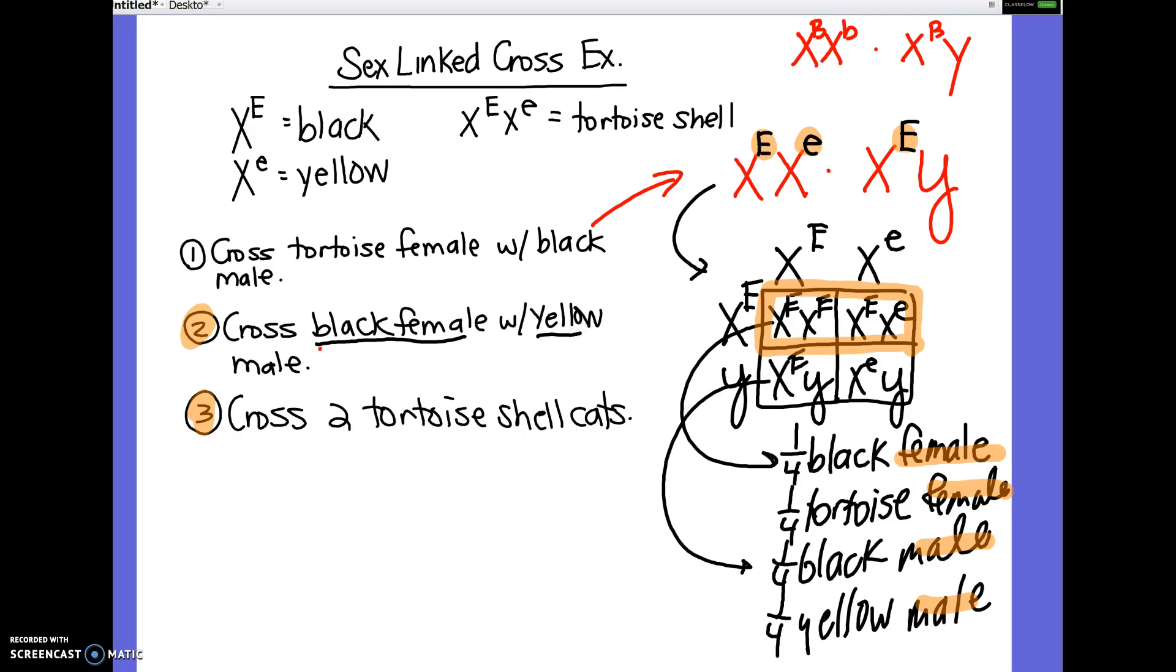So we're going to use, here's the thing. Since this is co-dominance, you know that if the female's black, she has to be X big E, X big E. She can't be heterozygous, because if she was heterozygous, she would be tortoiseshell and not black. And then the male is X little e, Y.